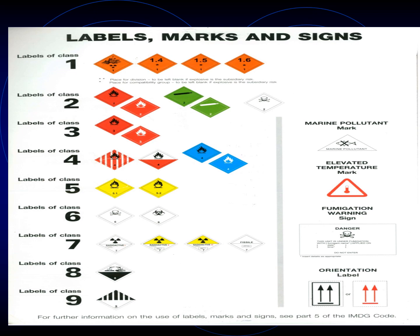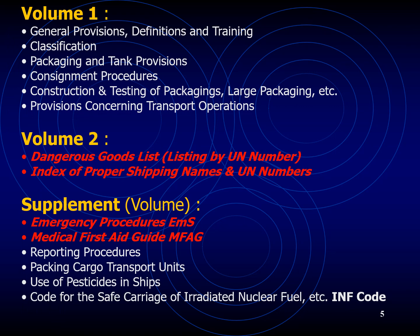For example, Class 4 mainly talks about flammable solids, but then you have Class 4.1 which covers flammable solids that are self-reactive substances and solid desensitized explosives. Class 4.2 is about substances liable to spontaneous combustion, and Class 4.3 covers substances which in contact with water will emit flammable gases. Similar subcategories exist in Class 5, Class 3, Class 6, and so on.